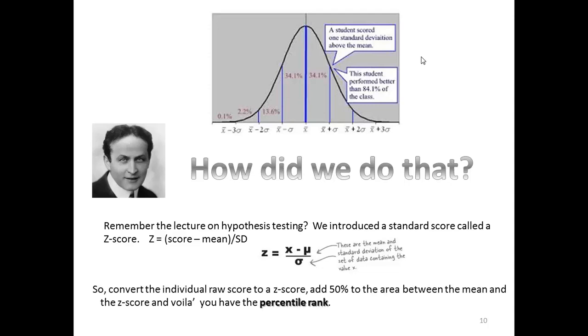So, we simply convert an individual raw score to a Z-score. Add 50% to the area between the mean and the Z-score and voila, you have the percentile rank.